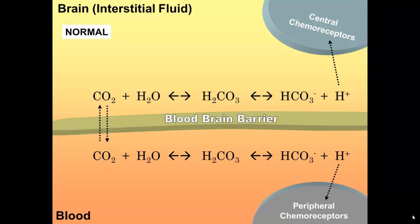In a previous lecture capture, we talked about how the central chemoreceptors and the peripheral chemoreceptors cooperate to detect partial pressure of carbon dioxide and to adjust the ventilation appropriately.